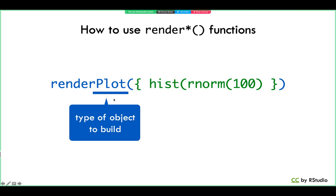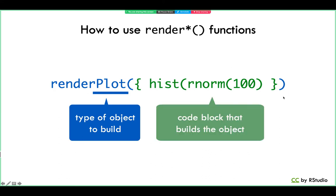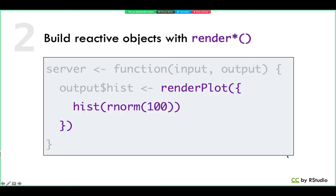All of the render functions have similar syntax — they all start with the word 'render,' and then the second word in camel case is the kind of object you want to build. The only argument to a render function is a code block, and this code block contains the R code for generating the object you want to make. In this case, it's just one line of code — hist(rnorm(100)) — to make the histogram. But you could add many more lines of code, perhaps doing sophisticated computations, which is how you can build really sophisticated apps in Shiny by adding complex logic inside the server function.